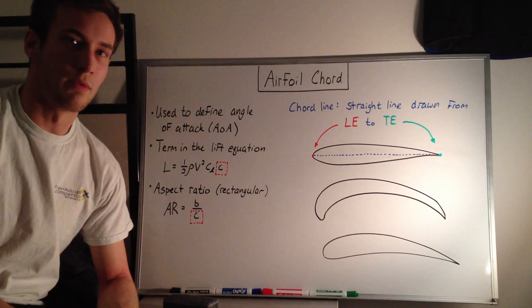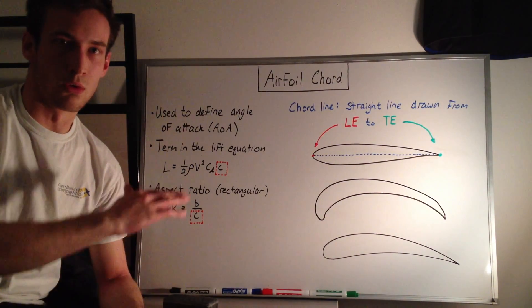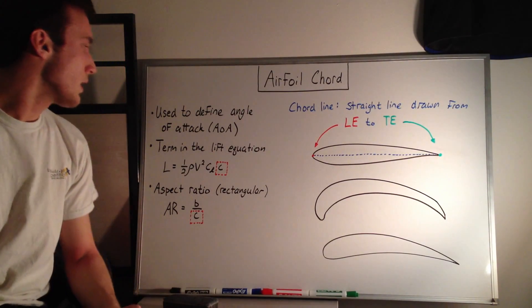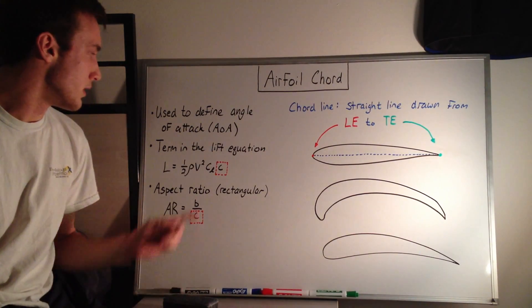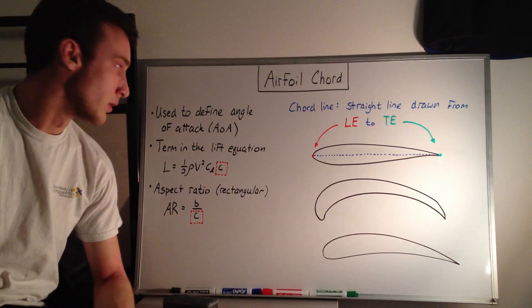It's a reference line of the airfoil that's used to define the angle of attack, which is the angle between the cord line and the relative wind coming at the airfoil. Another place we use it is in the lift equation, which I've written here for a 2D wing section or airfoil.